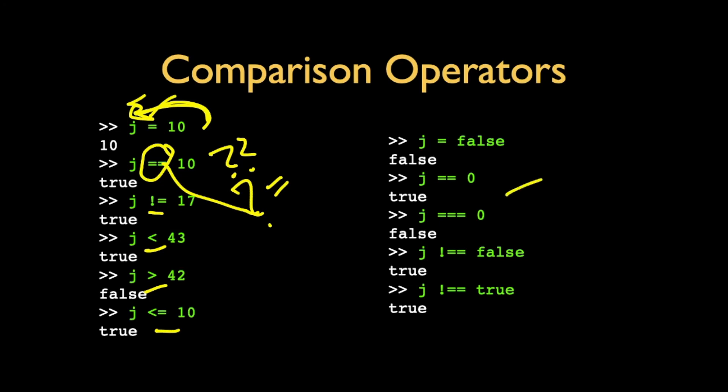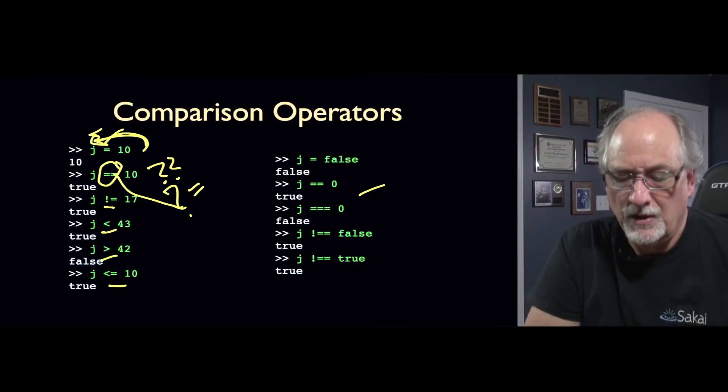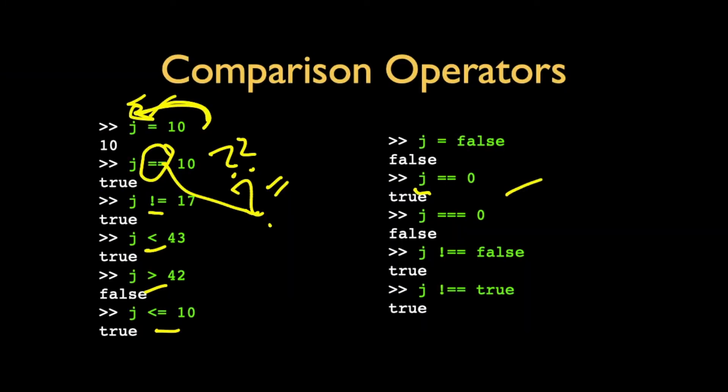Now, there's a special operator, and you see this in Python in the is and is not operator. So, the double equals is a comparison with type conversion. So, it says, can the left side of the double equals, the J, be converted eventually to become equal to zero? And so, in this particular case, J is false. So, it is of type Boolean. But a false can be coerced into zero. So, false is equal to zero with some conversion.